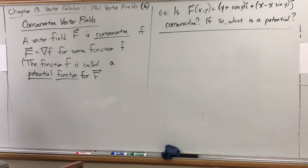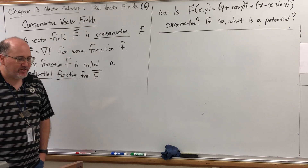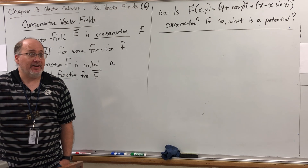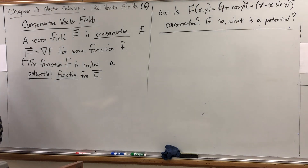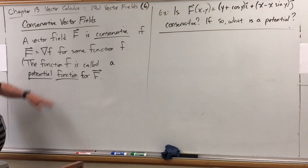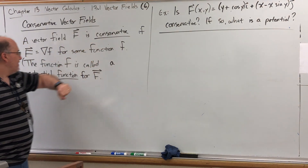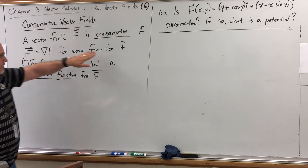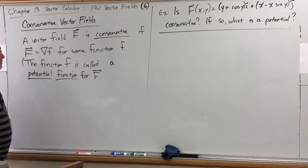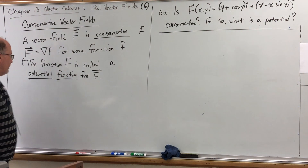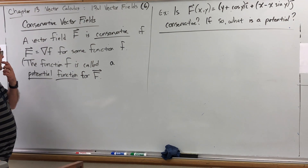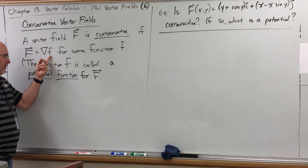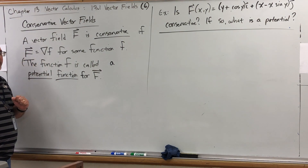The word conservative and the word potential actually have physics context. Walker can elaborate a lot more than I can — it has to do with energy, conservation of energy. But the definition is: a vector field capital F is conservative if capital F is the gradient of some function lowercase f. In other words, if you're the gradient of something. So you can say that a conservative vector field is a gradient vector field and vice versa. The function lowercase f is called a potential function for the vector function capital F. In other words, if a vector field is the gradient of a function, that function is the vector field's potential function.